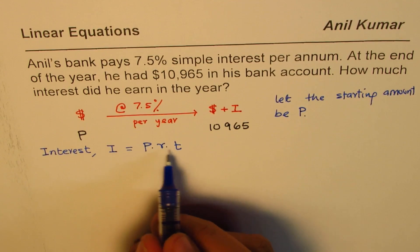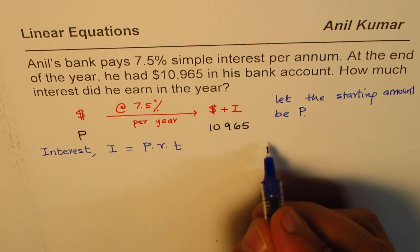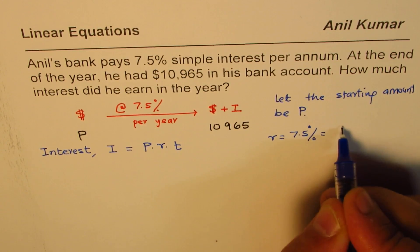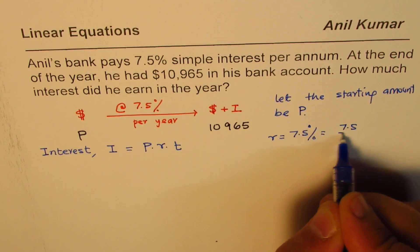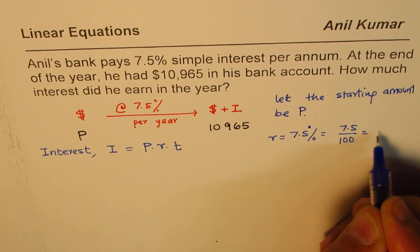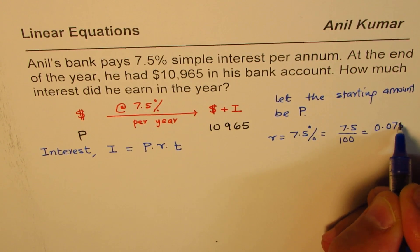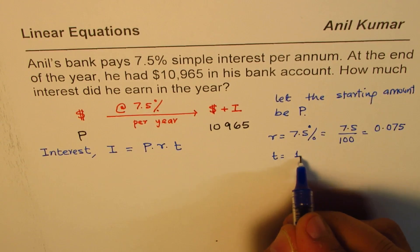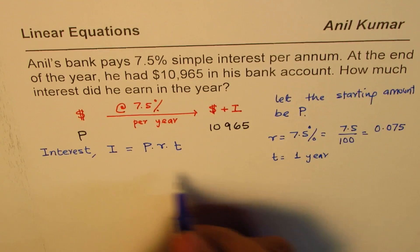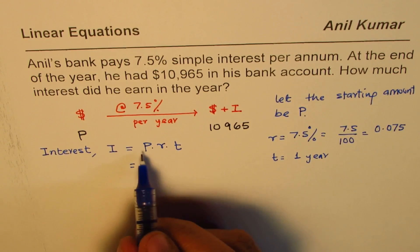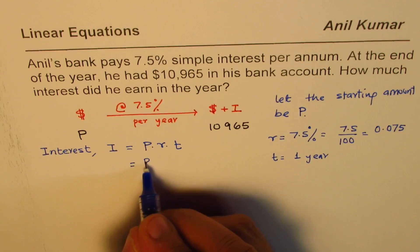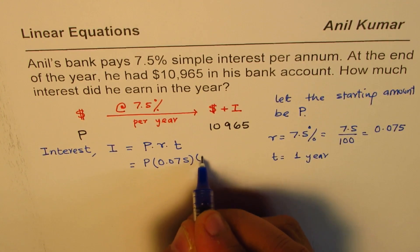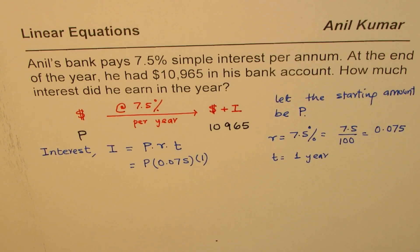In our case, what is R and what is T? R is 7.5% which is 7.5 over 100 or 0.075 in decimals. And what is time? Time is 1 year. Now, we can substitute these values. We don't know what P is but we know other things. So, we get P times 0.075 times 1. So, that much is the interest.